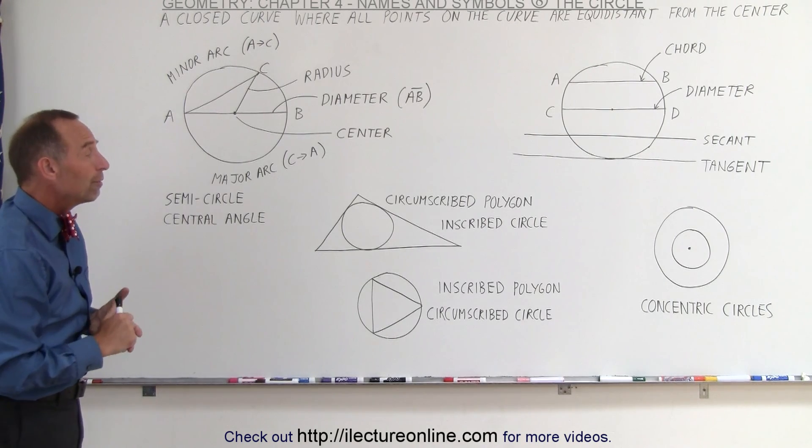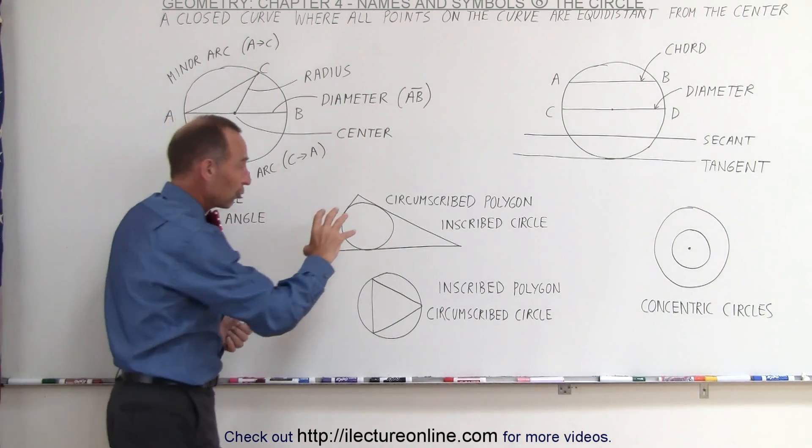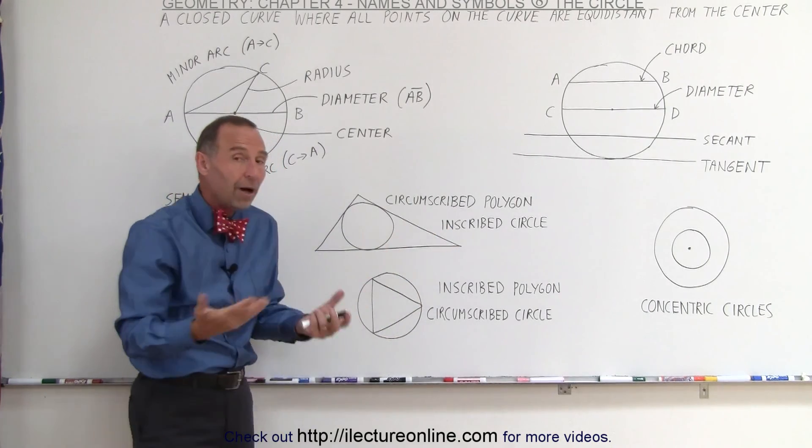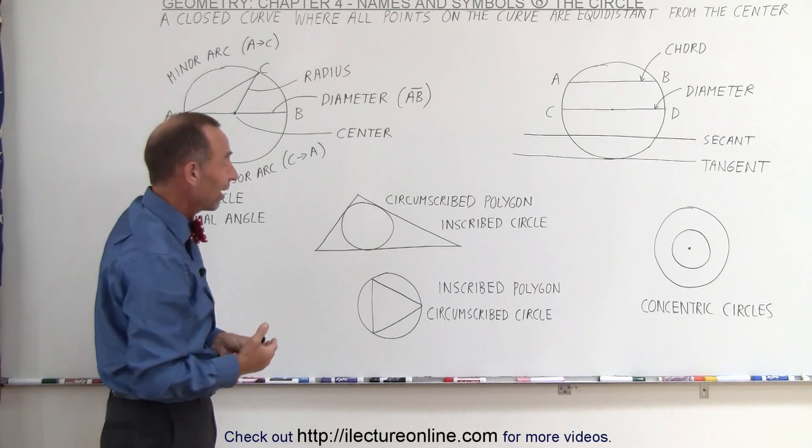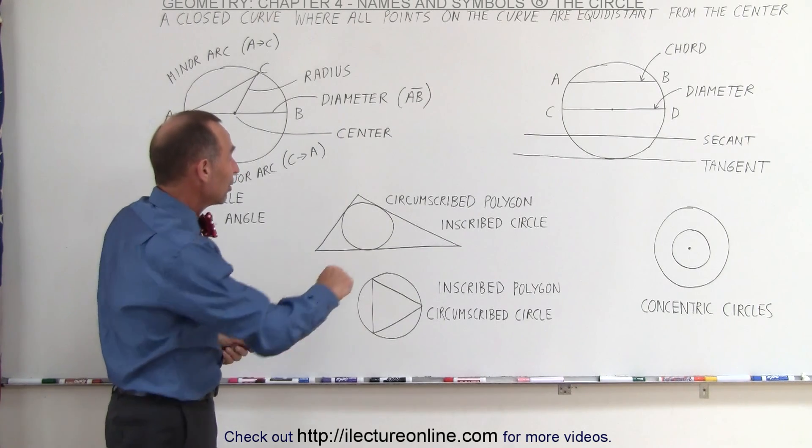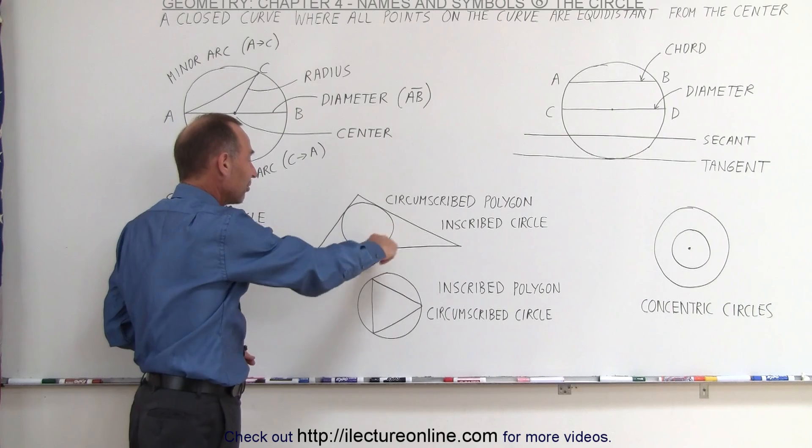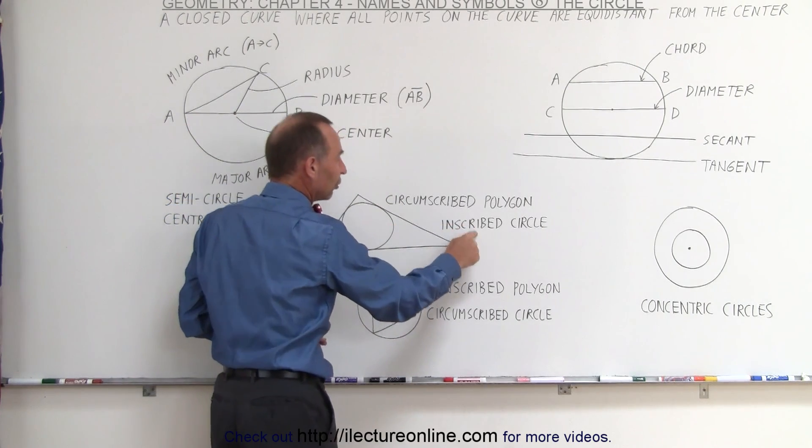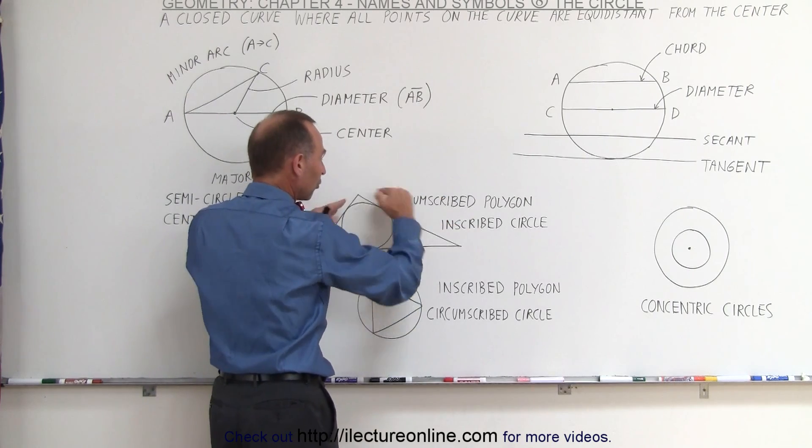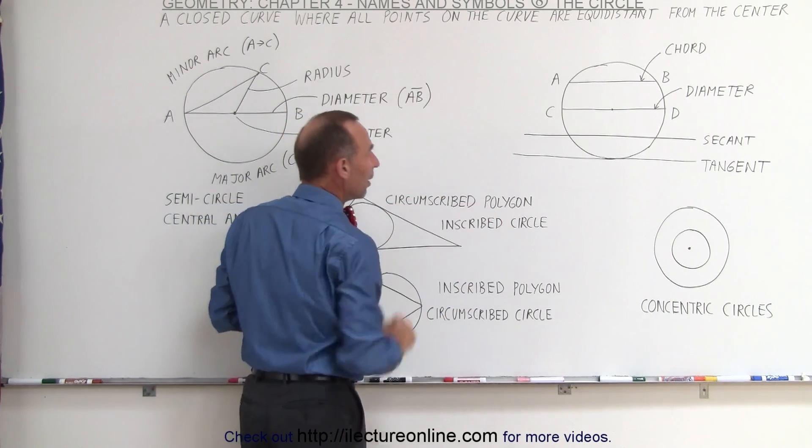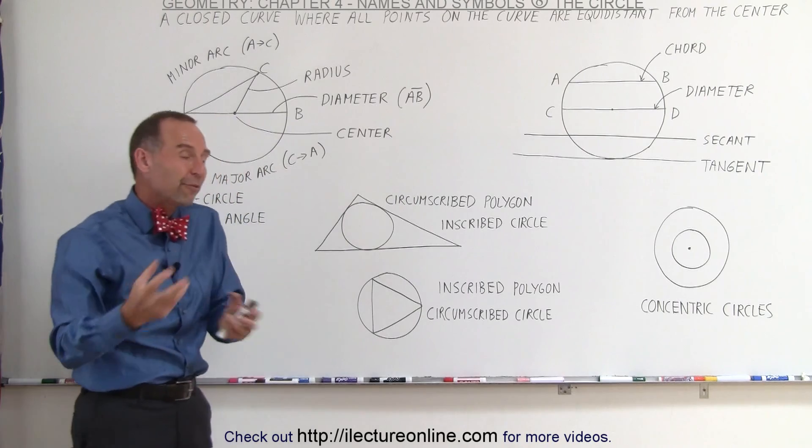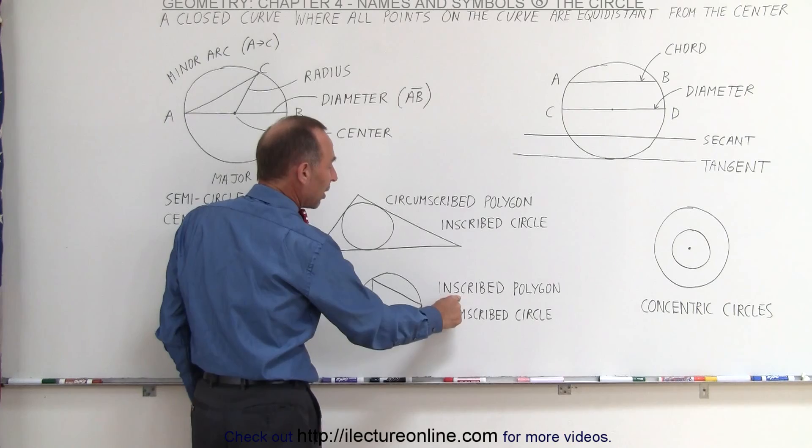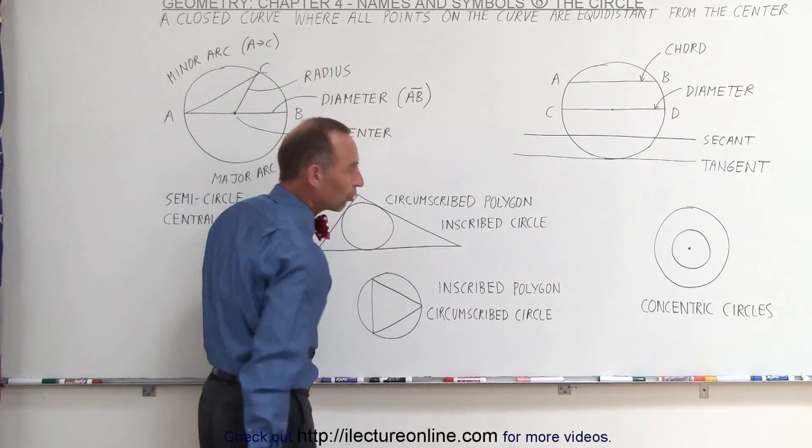Some other naming conventions we should be familiar with. If we draw a circle inside this triangle, or we can also call it a polygon because it has many sides, more than two sides, three sides in this case, you can see the circle is inside the polygon. Therefore we call that an inscribed circle and the polygon which goes around the circle is called the circumscribed polygon. But if we reverse the order and draw the polygon inside the circle, then it's called the inscribed polygon and the circumscribed circle.